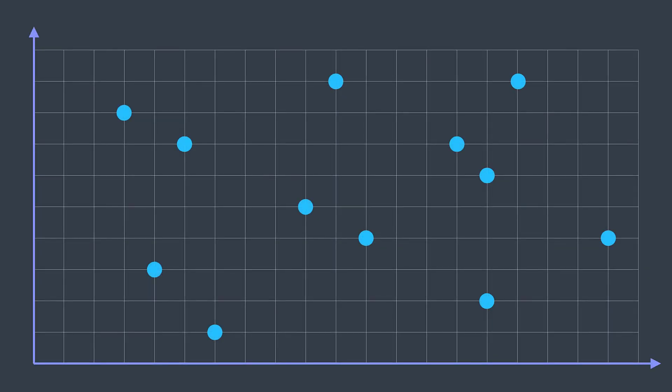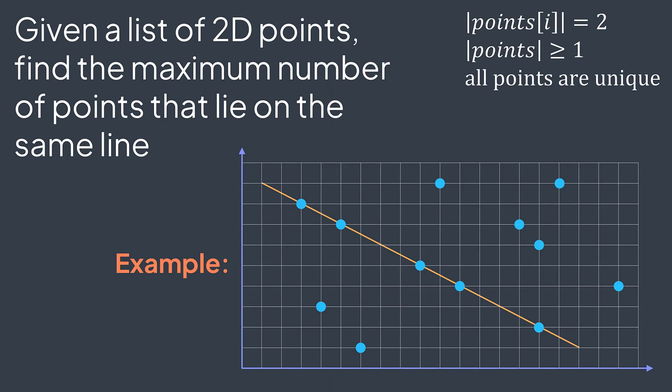Imagine that you have a set of 2D points and you want to find the line that passes from the most points. That's what the max points on a line problem is about. We have a list of 2D points and we want to find the maximum number of points that lie on the same line. In the example below, it's 5 because we have a line that passes from 5 points. Note that all points are unique.